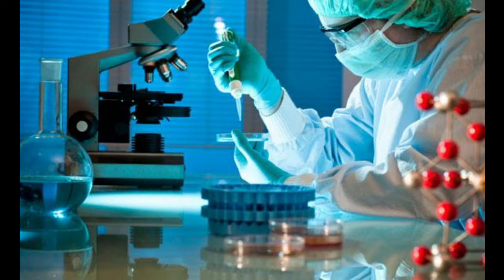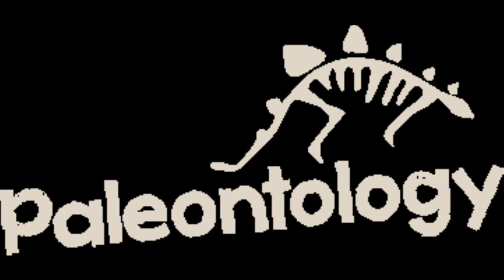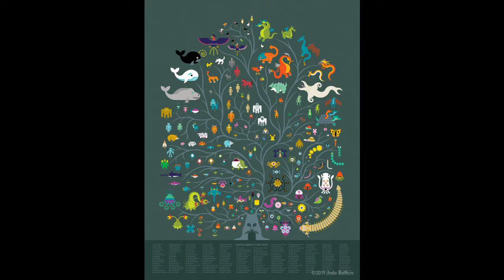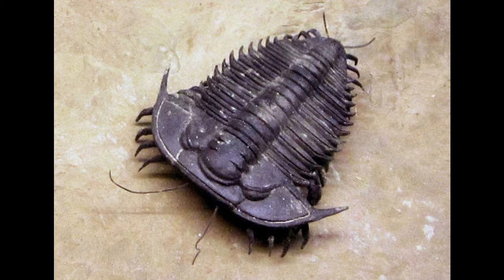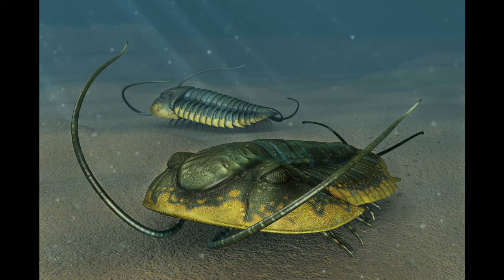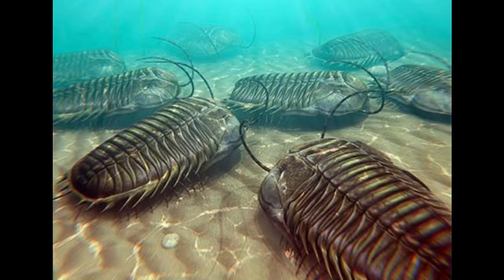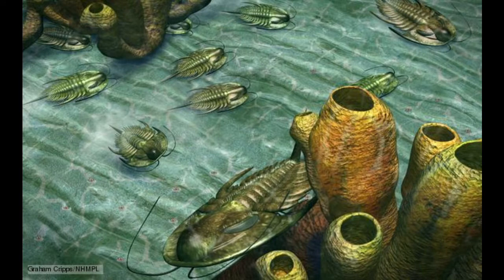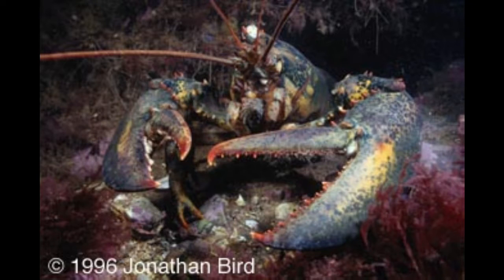The study of these fossils has facilitated very important contributions to paleontology, evolutionary biology, and plate tectonics. Trilobites also had many lifestyles. Some evolved to roam the seabed as predators, some as scavengers, and some as filter feeders. Others swam feeding on plankton. Most lifestyles of modern marine arthropods are seen in trilobites, except for parasitism.